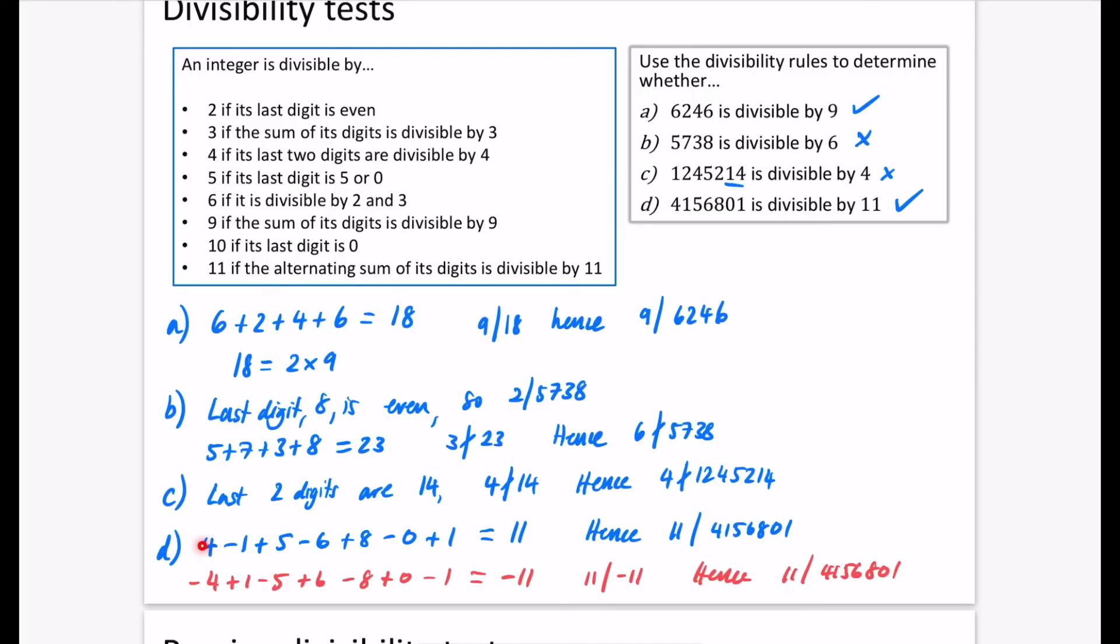You also don't have to start with the 4. You could start with the 1. The key thing is that you do them in order and it goes plus, minus, plus, minus, or minus, plus, minus, plus, minus, plus. And don't be alarmed if you get something that sums to something that is negative. So let's say that they sum to negative 22. Negative 22 can be divided by 11. So it still shows that the overall number can be divided by 11.